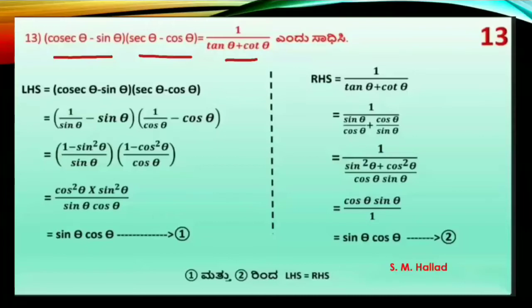I will show you LHS as well as the RHS for the next problem. The expression is cosec θ minus sin θ, and sec θ minus cos θ. Here, cosec θ equals 1 divided by sin θ.